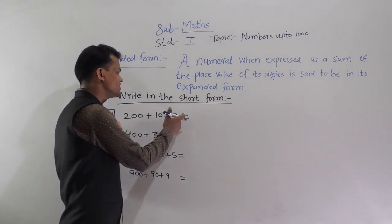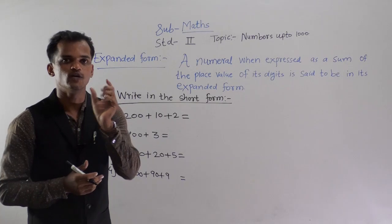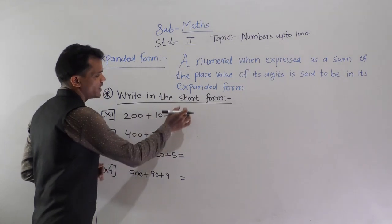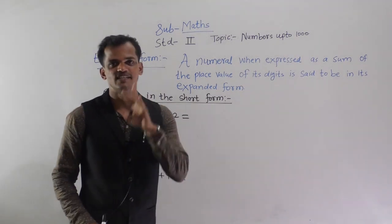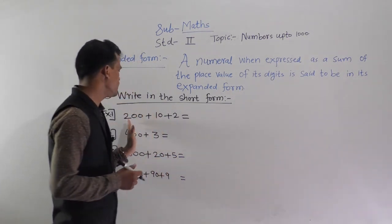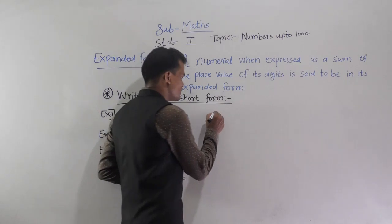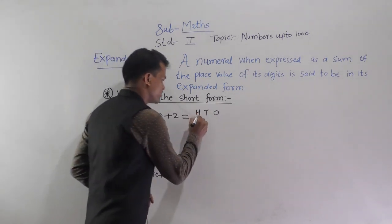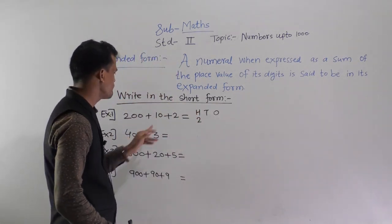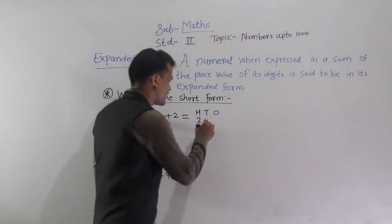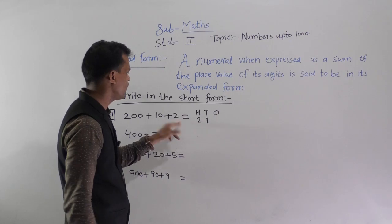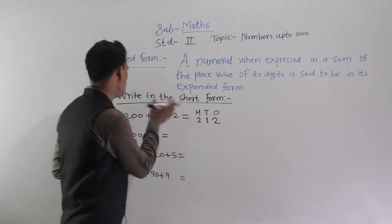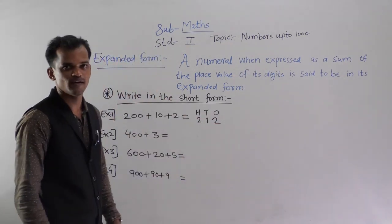Now the expanded form is given and we have to write the number in short form. See the expanded form: 200 plus 10 plus 2. We have to form a three-digit number with places: ones, tens, and hundreds. 200 goes in the hundreds place, 10 means 1 ten, and there are 2 ones. So 212 is the short form of 200 plus 10 plus 2. Understand?